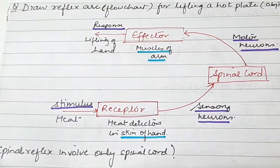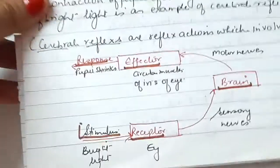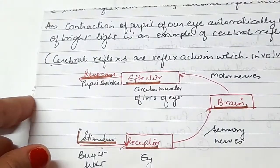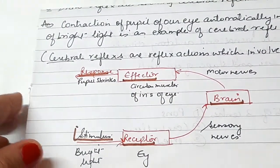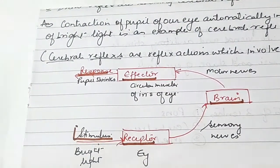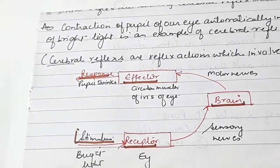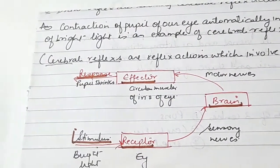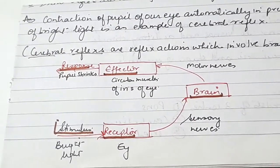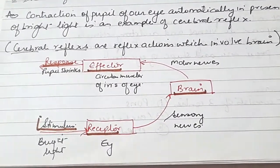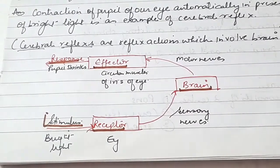When the brain is involved, for example when we enter into bright light, our eye's pupil automatically contracts. So if we can represent the flowchart in this form, how do we do it?